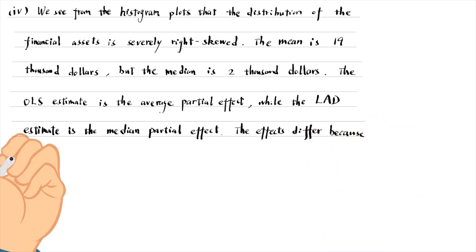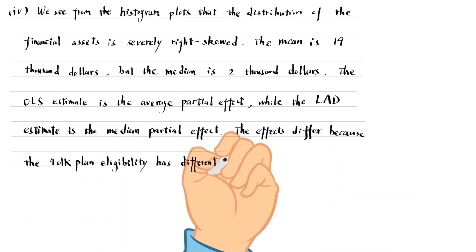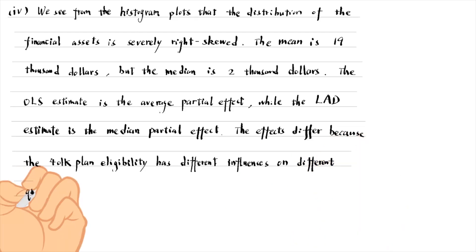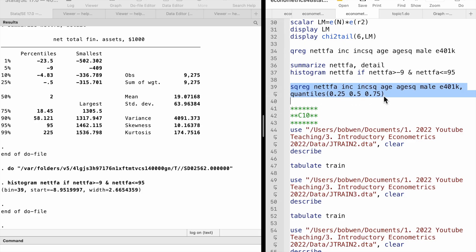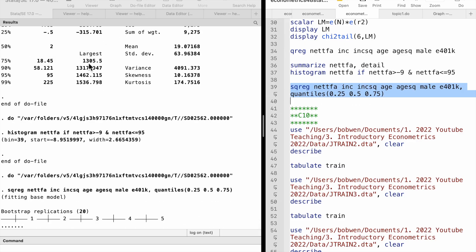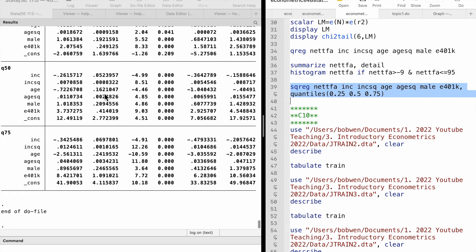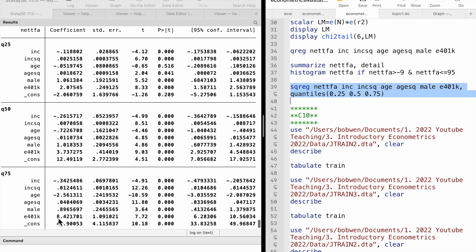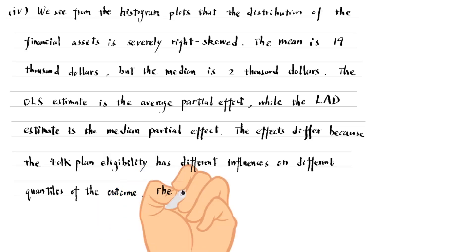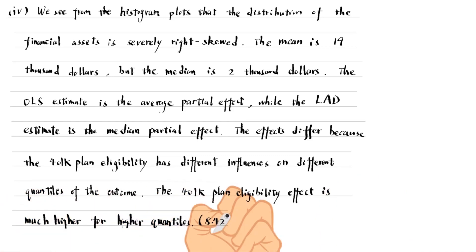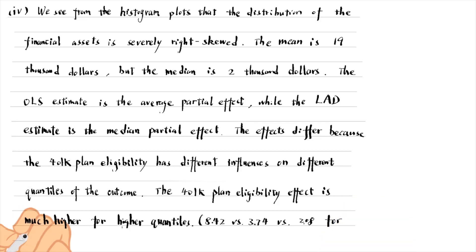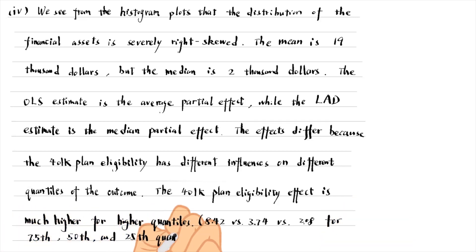The effects differ because the 401 plan eligibility has different influences on different quantiles of the outcome. We can see it clearly when we run the quantile regressions for the 25th, 50th, and 75th quantiles. The 401 plan eligibility effect is much higher for the higher quantiles. The mean is at a much higher quantile than the median, so the average partial effect is higher than the median partial effect.